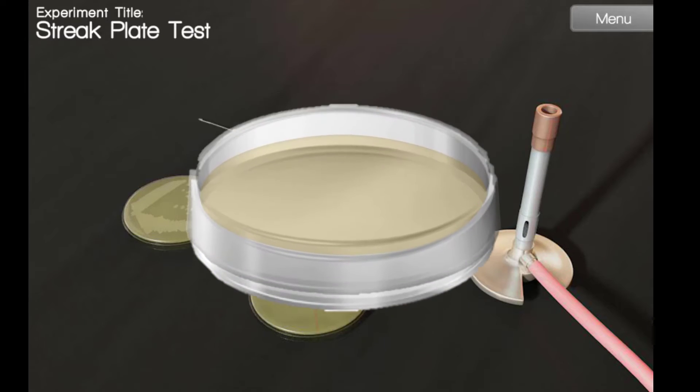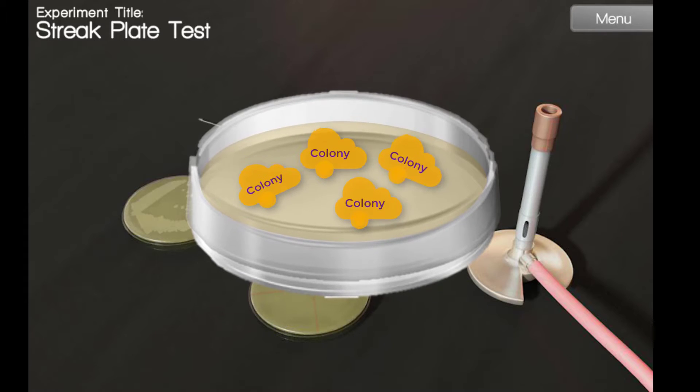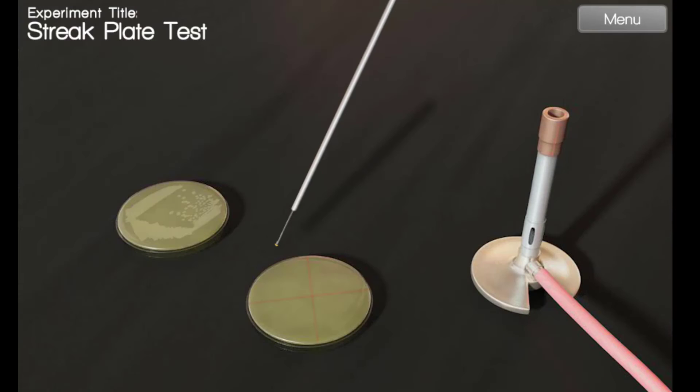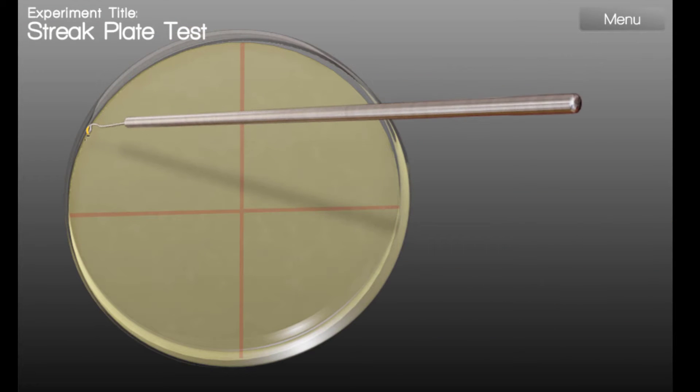However, isolated colonies should be growth originating from only one bacteria. Our objective is to choose bacteria from one of these pure colonies and create a pure culture using the streak plate method. Let's begin.